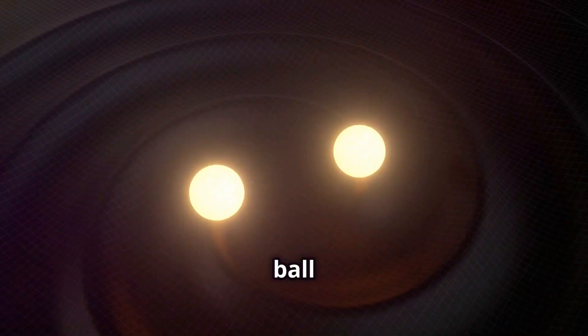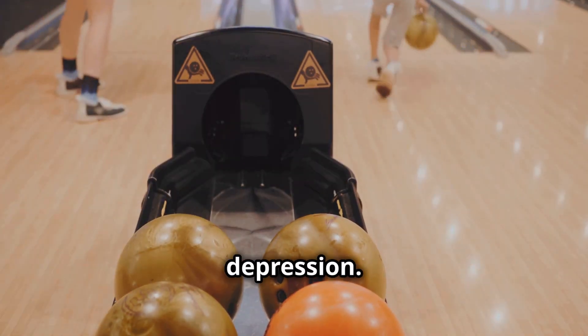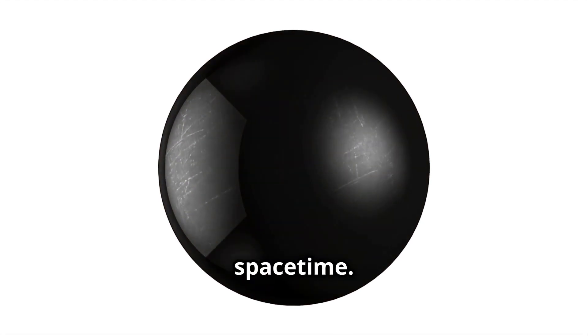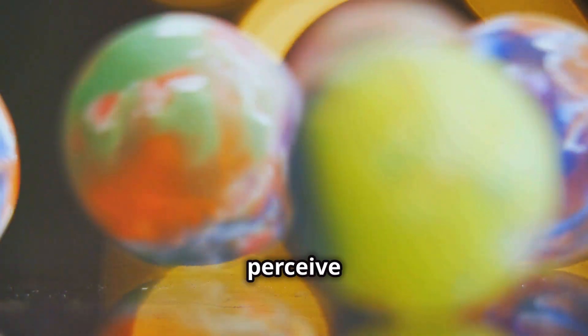Imagine a bowling ball on a stretched-out rubber sheet. The marble's path curves near the bowling ball due to the depression. Massive objects like stars and planets warp space-time. This warping is what we perceive as gravity.